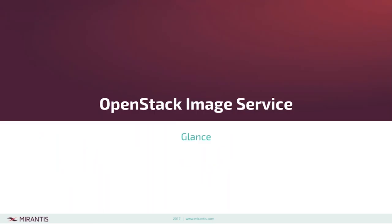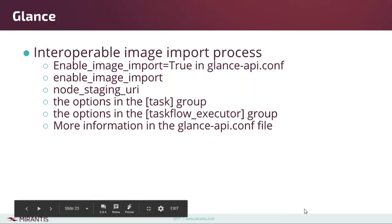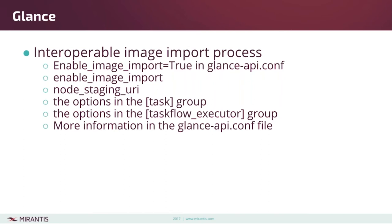Moving on to Glance: in Pike you have a new experimental capability called interoperable image import. This is basically a way to provide bits to Glance and have Glance create an image for you, rather than starting up an instance and saving it from there. There are some options you need to set up in your configuration, which you can find documented in the glance-api.conf file.